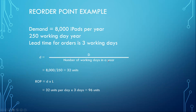For a reorder point example: assume annual demand for iPads is 8,000 units and there are 250 working days per year, with a lead time of 3 working days. Daily demand = 8,000 / 250 = 32 units per day. Reorder point = 32 × 3 = 96 units. So once 96 units remain in stock, we need to reorder to replenish inventory by placing an order for Q*.